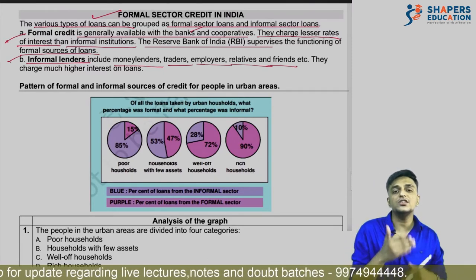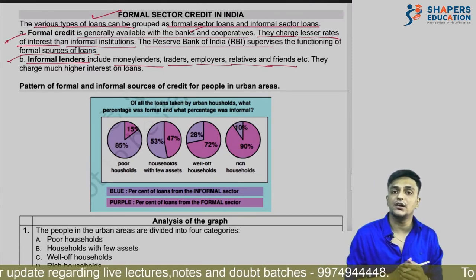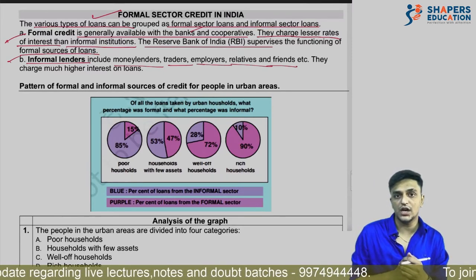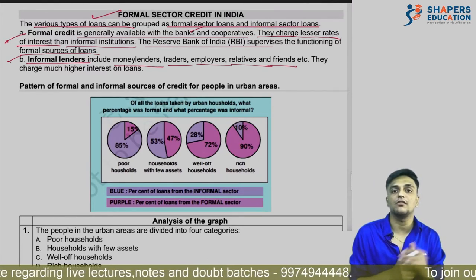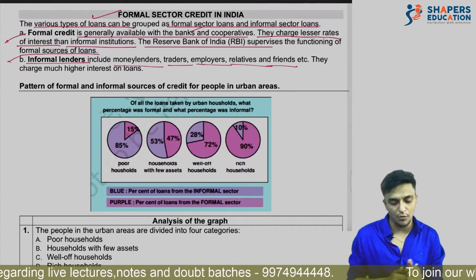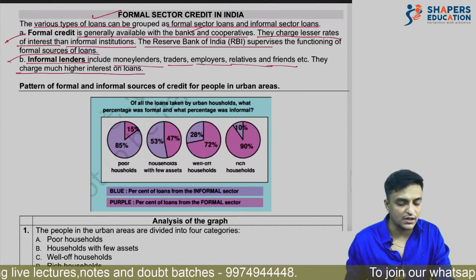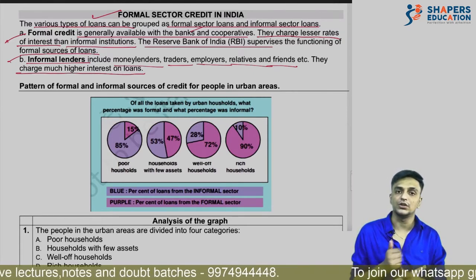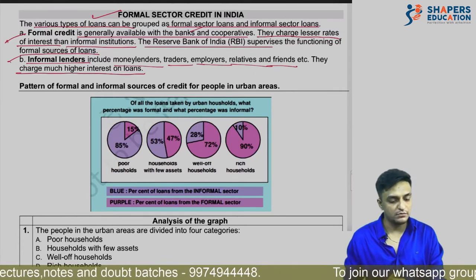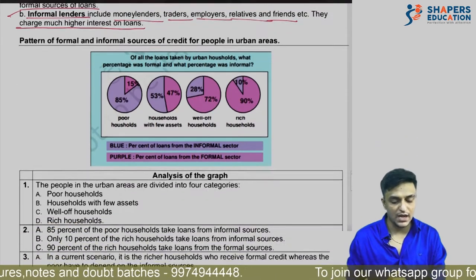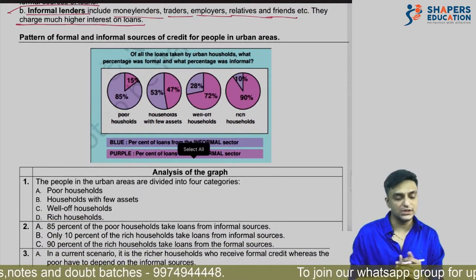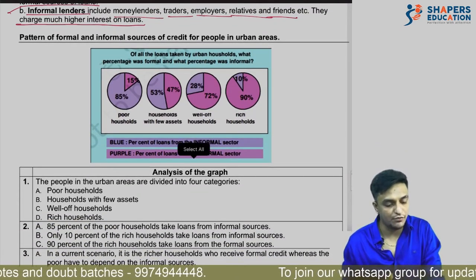Banks and cooperatives have to pay to regulatory authorities. Corporates charge much higher rates on loans. This is something that can be asked in analysis-type exam questions.